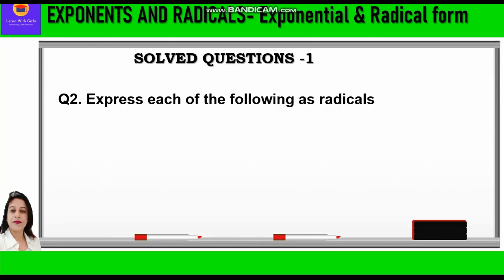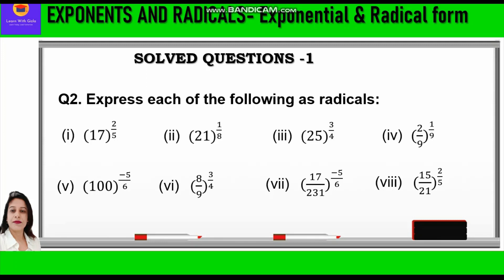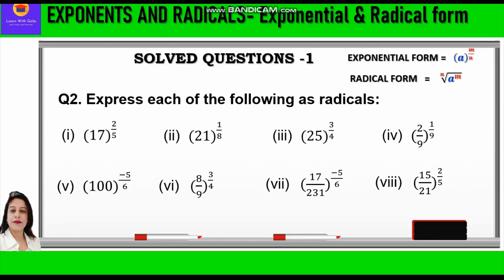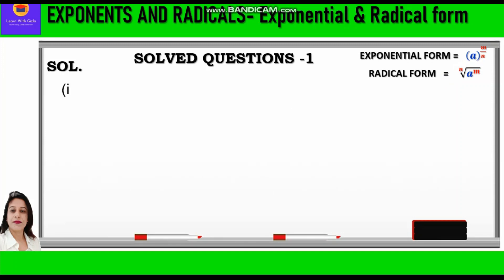Now let us take up the second question: express each of the following as radicals. The questions are in exponential form and we need to convert to radical form. Exponential form is a raised to power m by n, and radical form is nth root of a raised to power m. First question: 17 raised to power 2 by 5. Here 2 becomes the power and 5 becomes the root, so we write the 5th root of 17 squared.